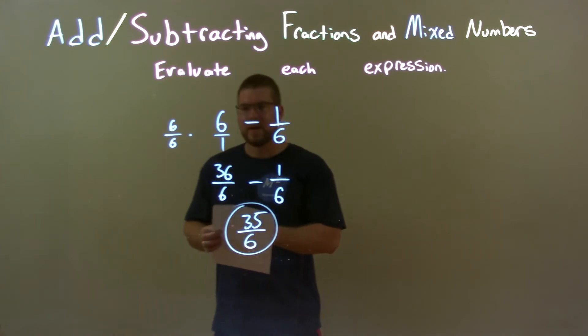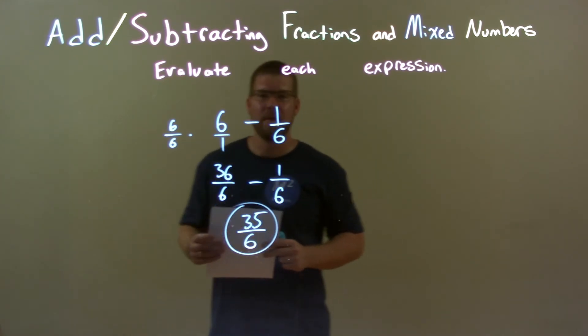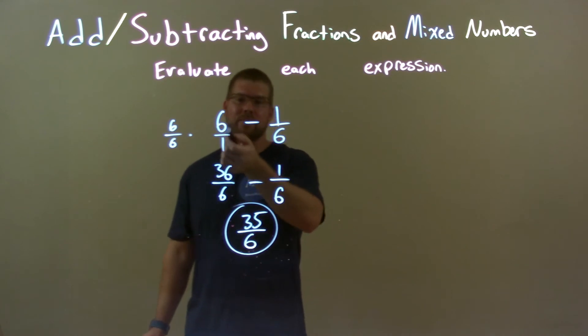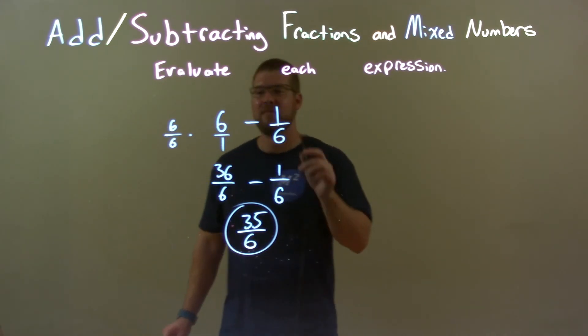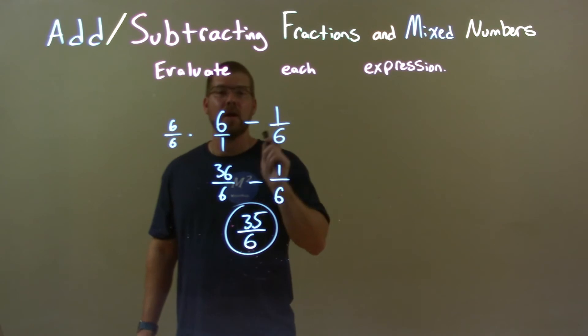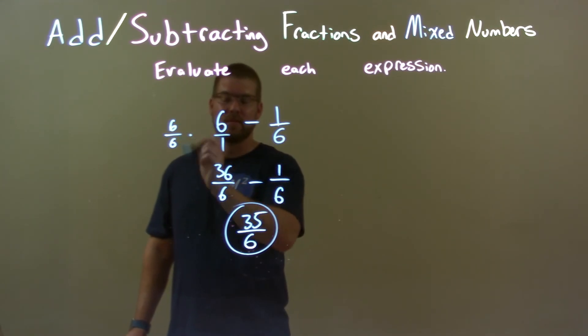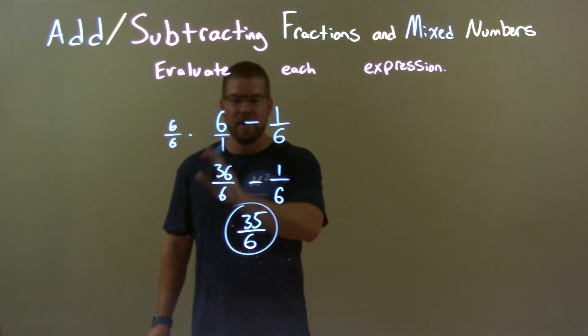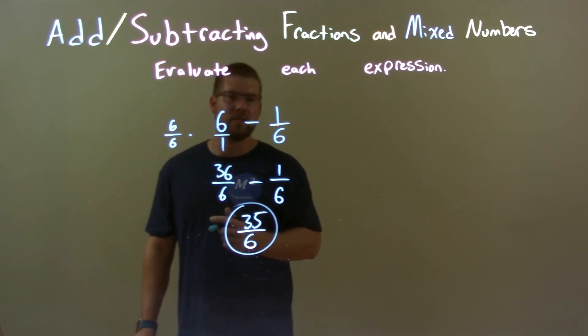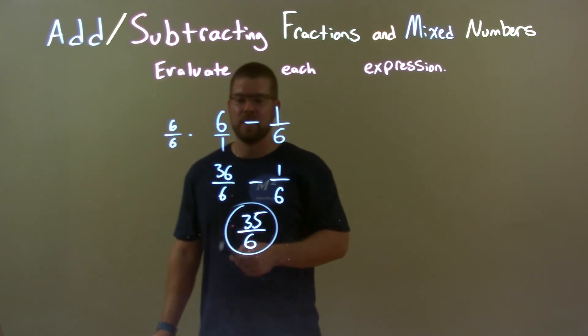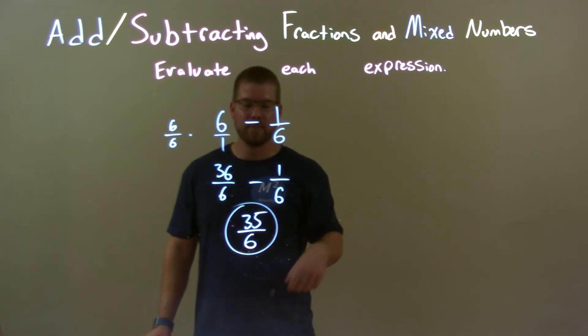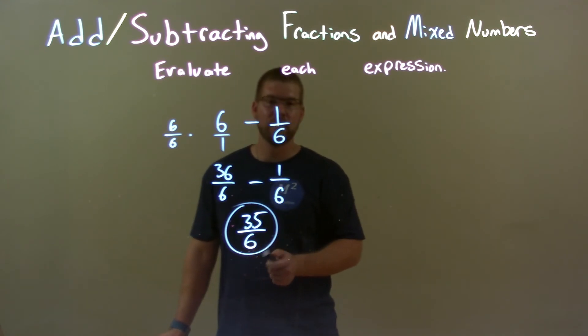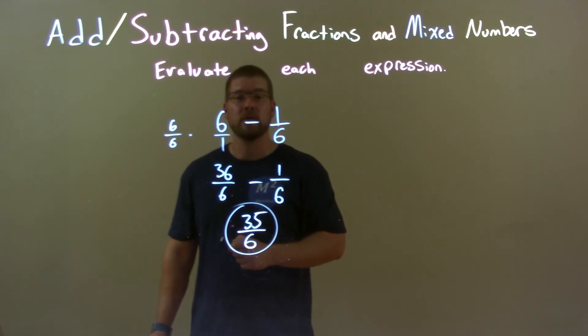So quick recap. We're given 6 minus 1 sixth. Well, first thing I did is realize 6 is the same thing as 6 over 1. Then I found the same base, the same denominator, by converting 6 over 1 to have a base of 6. So 6 over 1 multiplied by 6 over 6 gives me 36 over 6. Again, this fraction is the same thing as 6. Brought down 1 sixth here. So now we have 36 over 6 minus 1 sixth. And so, same base, that was the goal. We subtract the numerator, it's 35. Brought down the 6 in the denominator. So again, our final answer is 35 over 6.